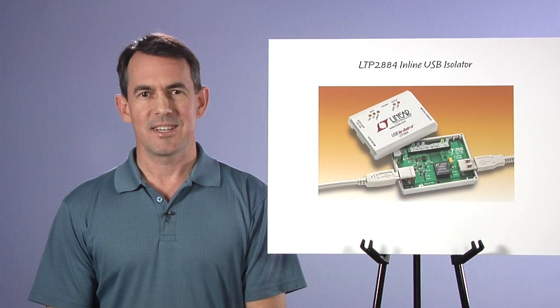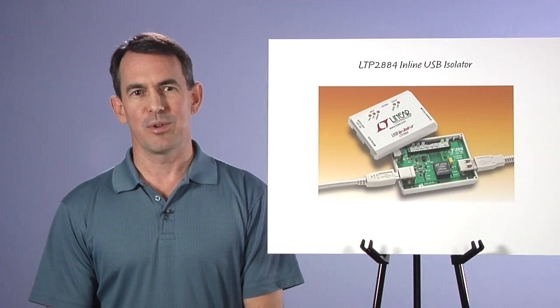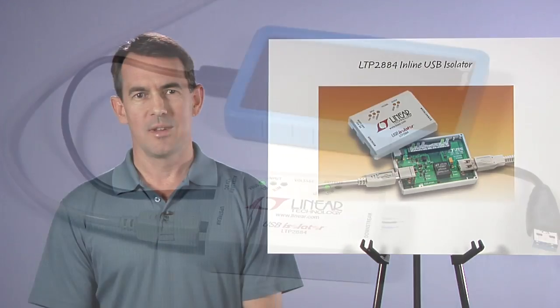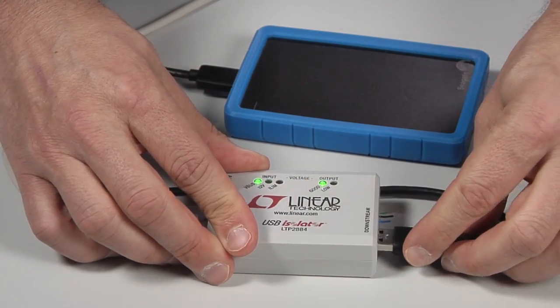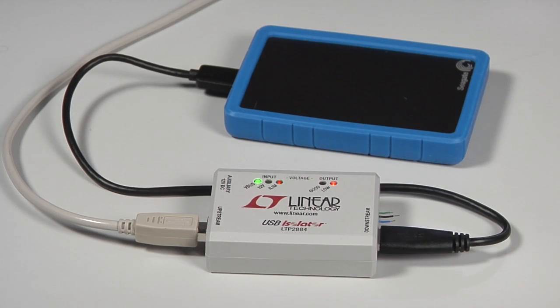Since we've already powered a memory stick, let's move to a more power-hungry peripheral, a portable hard drive. When I plug the hard drive into the LTP2884 box, we see an over-current LED light up, and the VBUS powered hard drive doesn't spin up.